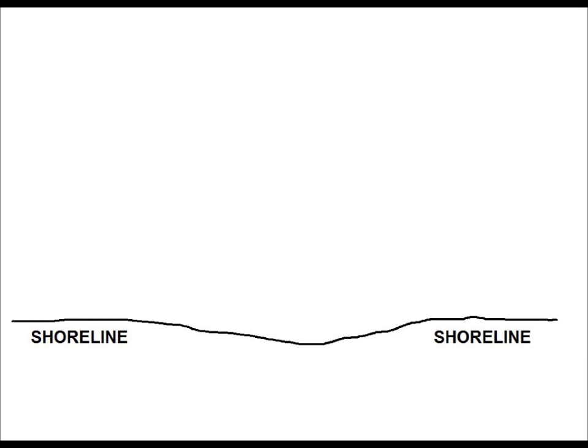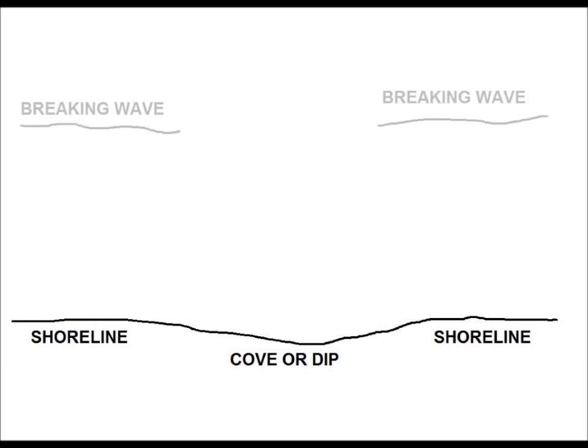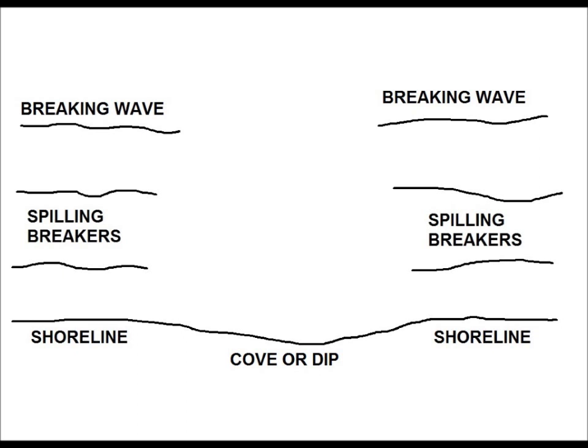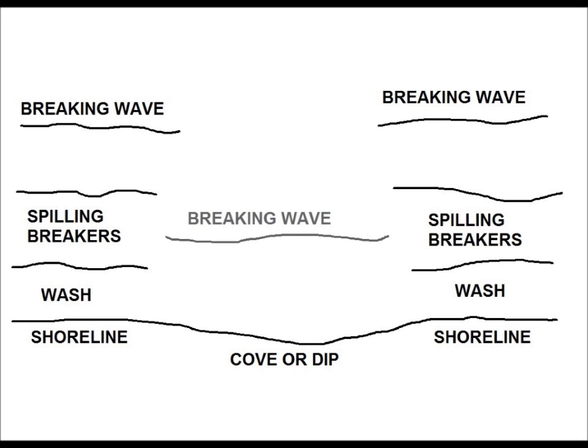So you roll out onto a beach and you're riding along looking at the shoreline as you go. You come across a small cove where the shoreline dips in towards you and you decide to take a closer look. You look out on the ocean and notice waves breaking a fair distance out on either side of the cove. As you watch the waves, you notice that they continue towards shore as spilling breakers and then deteriorate into wash as they get near the shore. But as you look straight out from the middle of the cove, you notice the waves cresting much closer to shore, or maybe breaking on the shore as plunging breakers. If this is what you see, then you just located a hole.